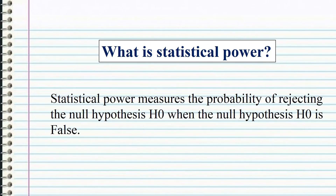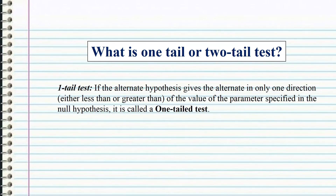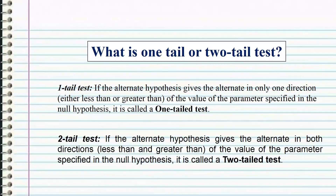Statistical power measures the probability of rejecting the null hypothesis H0 when the null hypothesis H0 is false. In a one-tailed test, if the alternate hypothesis gives the alternative in only one direction — either less than or greater than the value of the parameter specified in the null hypothesis — it is called a one-tailed test.